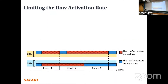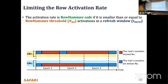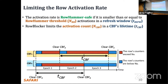To ensure Rowhammer-safe operation, Row Blocker limits the activation rate of blacklisted rows to a Rowhammer-safe level — specifically, no more than N_RH activations in a refresh window T_RFW. Row Blocker limits the activation count of a row within a CBF time window T_CBF. As long as the activation count in T_CBF is smaller than N_RH activations in T_RFW, we are Rowhammer-safe. There is a security analysis section in the paper that details this mathematically.